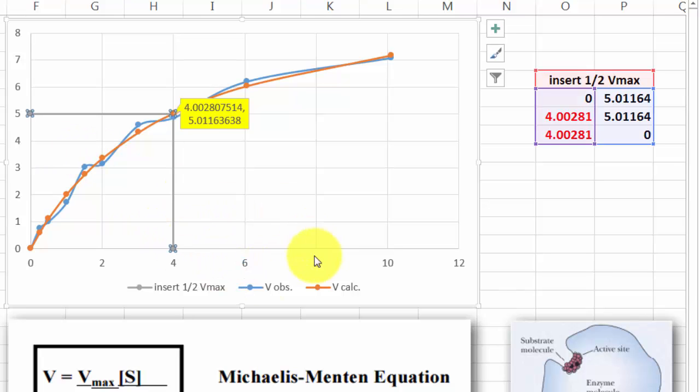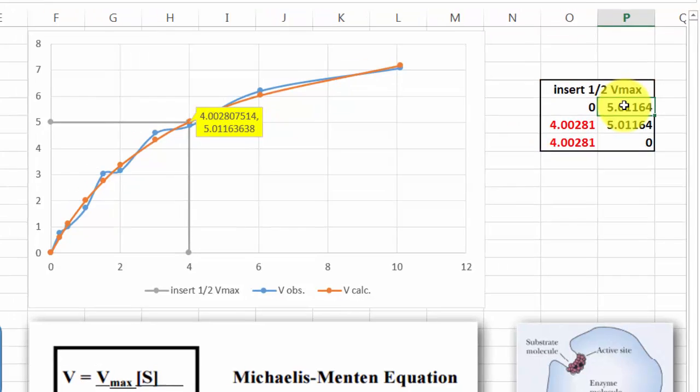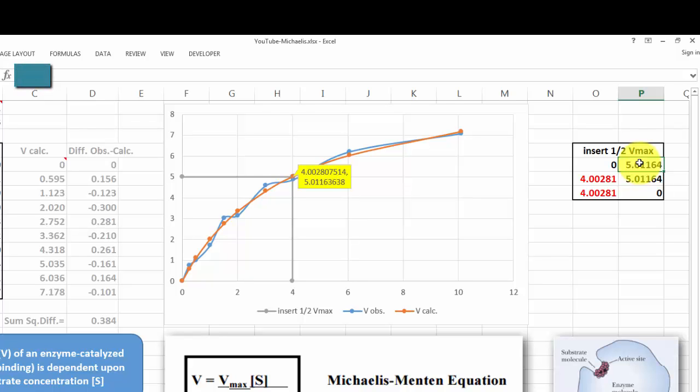Then I get this curve here by putting here three sets of coordinates. The first set of coordinates, of course here, that is 0 on the x-axis. And then half of Vmax on the y-axis. So this one is B2 divided by 2.